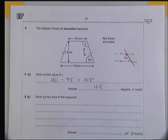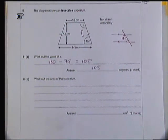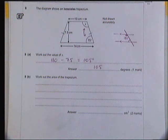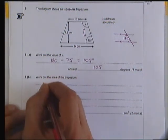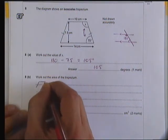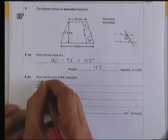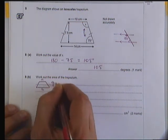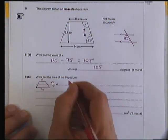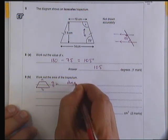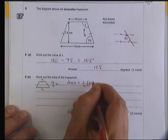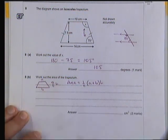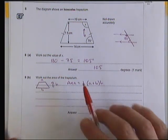Part B says work out the area of the trapezium. Now the area of a trapezium is a formula that's given to you in your formula book. It shows a little picture of a trapezium with a, b, and h mentioned, and it says the formula for the area is half times (a plus b) times h. You can think of the half (a plus b) as being the average of the two parallel sides.